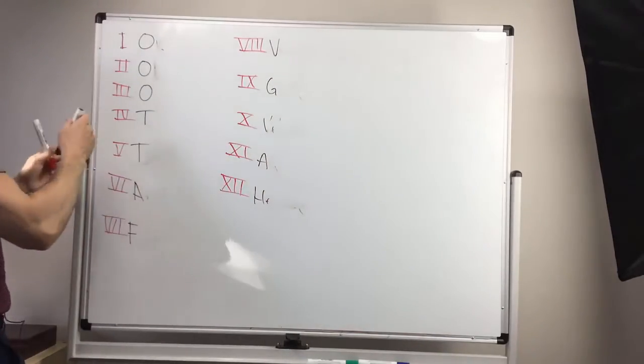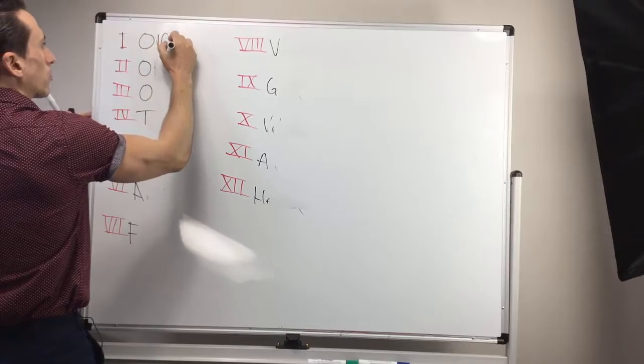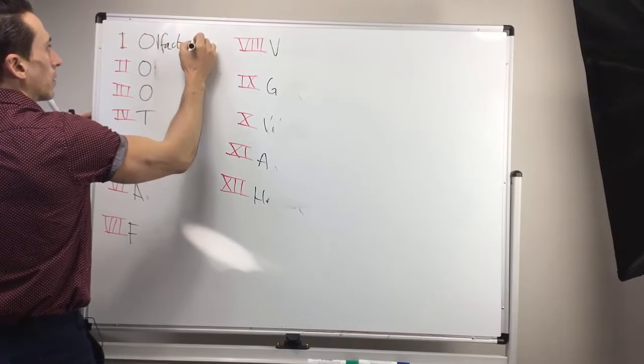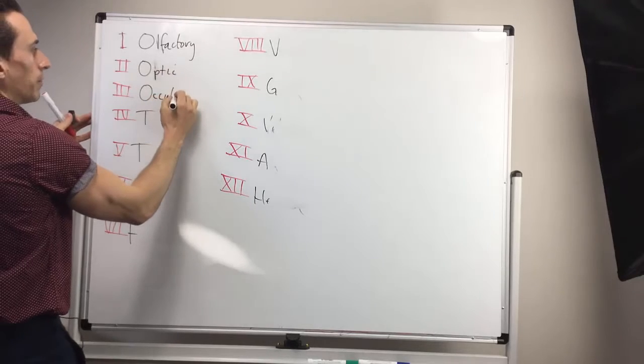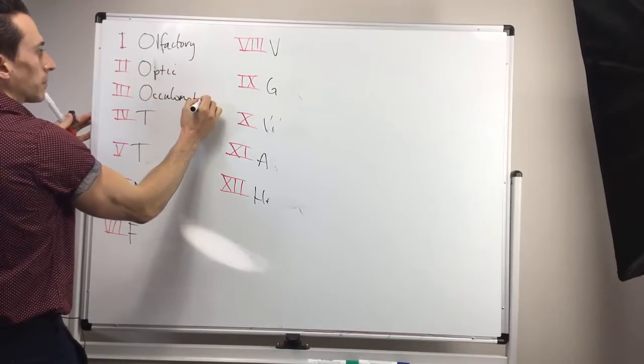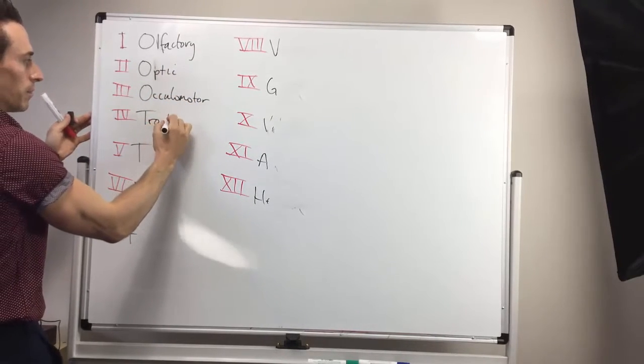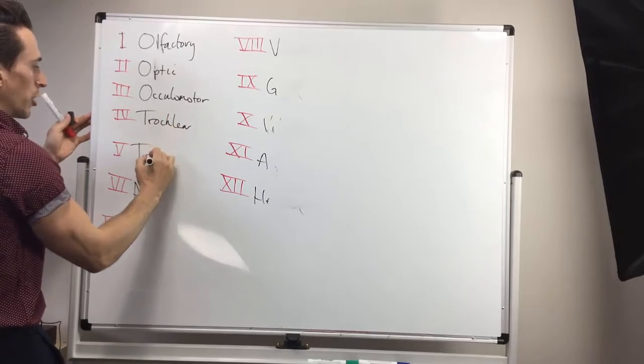So let's have a look and see what they are. Now, the first one is olfactory, then optic, then oculomotor, then trochlear, then trigeminal,